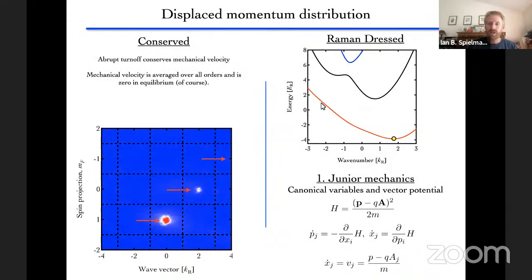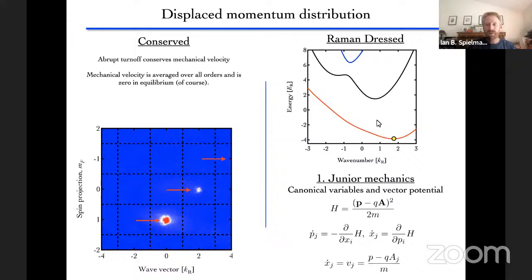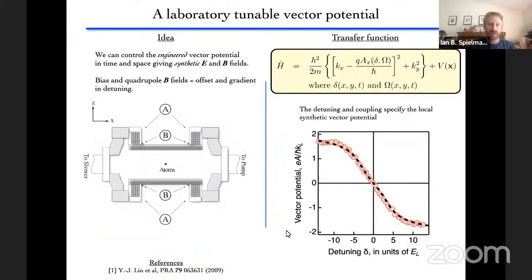As we change the detuning — shifting it in one direction — we see two things: each of the states moves to the right by an amount given by the shift in momentum, and the amplitude decomposition changes. As expected, one parabola becomes lower and you see a larger admixture of that state. We can now demonstrate that if we adiabatically load that state, we see the outcomes we'd expect.